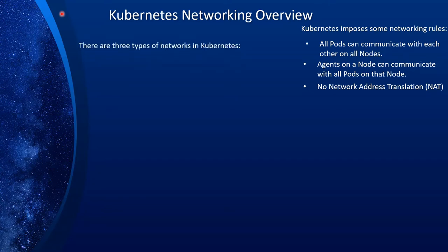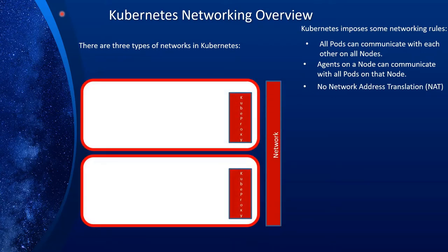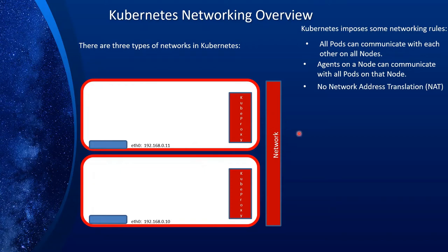There are three types of networks in Kubernetes. First, let's look at the node network. We attach the Kubernetes cluster to it, and each node will have its own IP address drawn from the network either through DHCP or more commonly through static IP addresses. These nodes can communicate freely with each other and reach resources on the same network. That defines our node network.